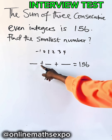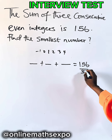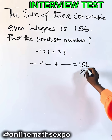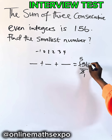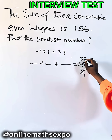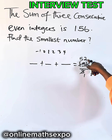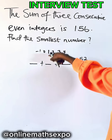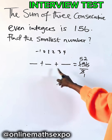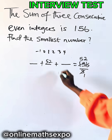So what do you do? Because there are 3, just divide this by 3. If you divide 156 by 3, this will give us 52. So we have 52 — this 52 is to be at the middle. So the middle number becomes 52.